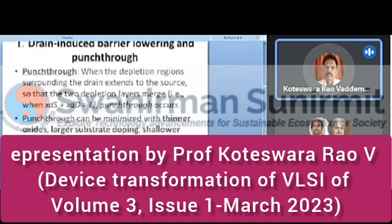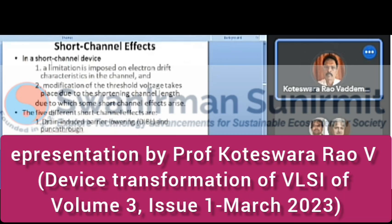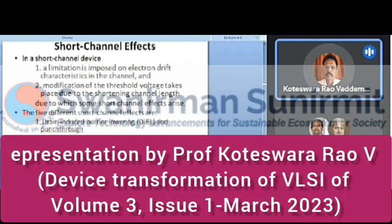What are the short channel effects? In a short channel device, limitations are imposed on electron drift characteristics in the channel, and modification of the threshold voltage occurs due to the shortening of channel length. The five short channel effects are: Drain-Induced Barrier Lowering (DIBL) and punch-through, mobility degradation due to surface scattering, velocity saturation, hot carrier effects (also called impact ionization), and output impedance variations. These are adverse effects that must be overcome.